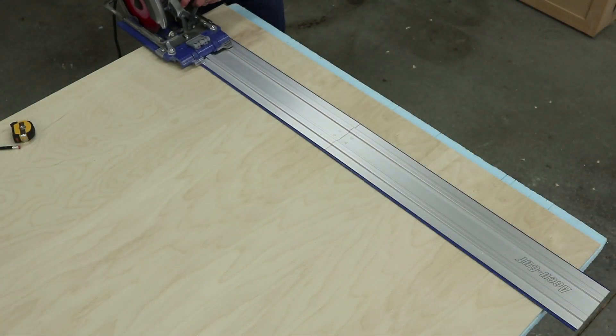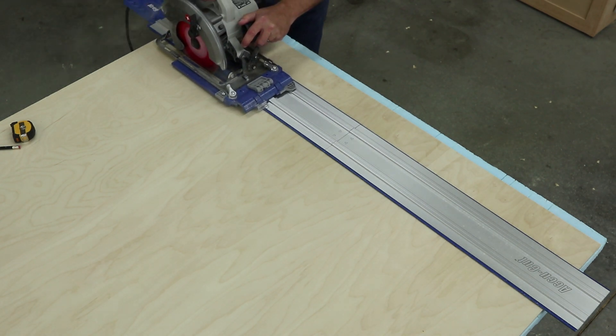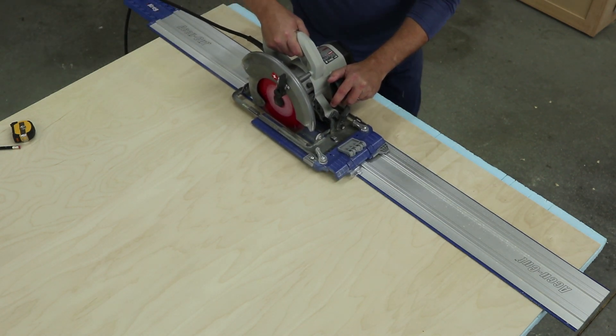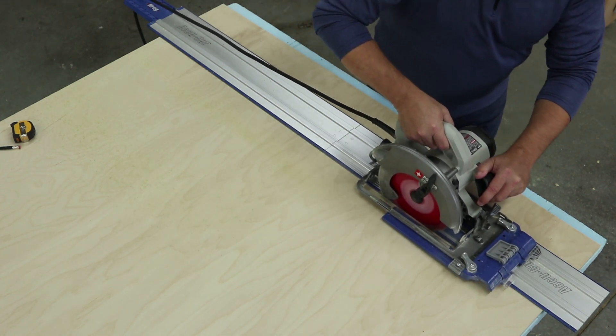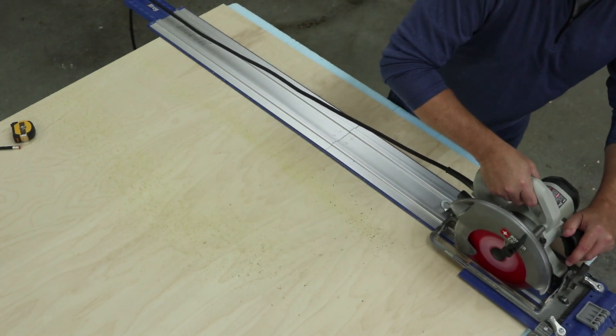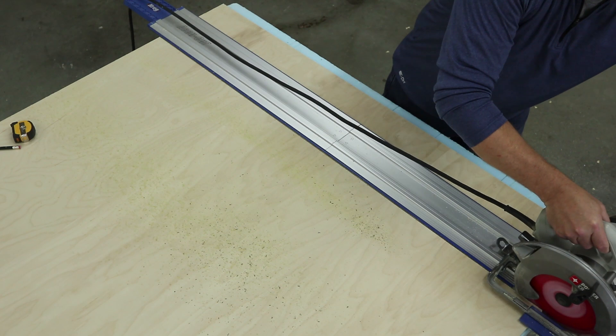Another type of saw guide is a track like this Craig AccuCut. With this type of guide, the track guides your saw as your saw rides on top. Cutting is almost effortless. Just use some downward pressure as you push the saw along.